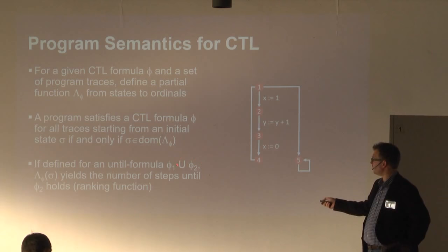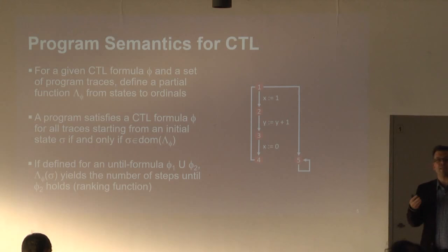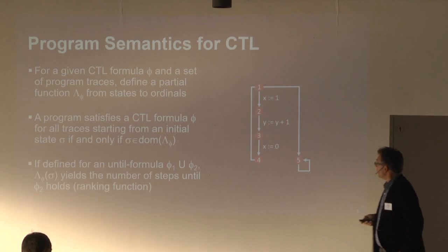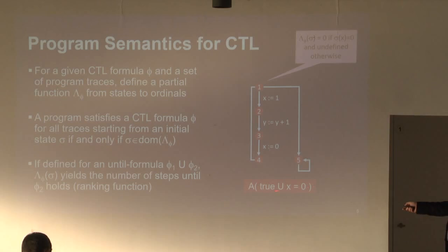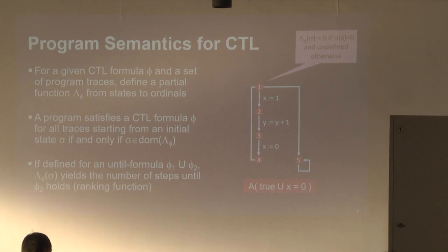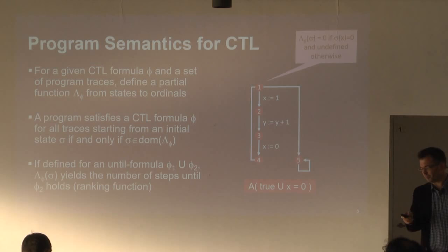The second piece of information is that if phi is an until formula, the ordinal value returned is a ranking function — intuitively it counts how many execution steps we need to take until phi_2 actually holds. Looking at the formula 'x equals 0 must hold eventually': lambda of the starting state will be 0 if x is initially 0, meaning it's defined and the formula holds immediately. It's undefined in all other cases, because for all other cases it's possible the execution takes a branch where x is never 0, and since we have a universal quantification, we must consider that possibility.